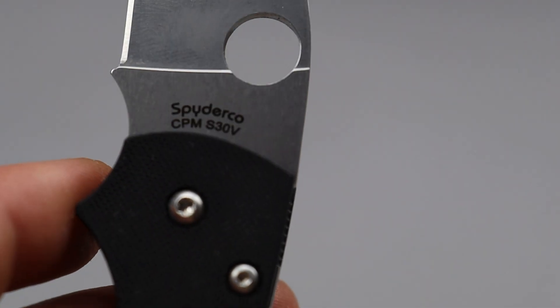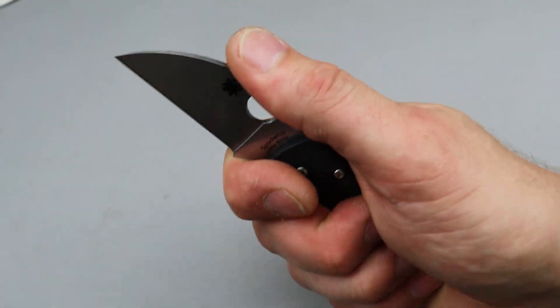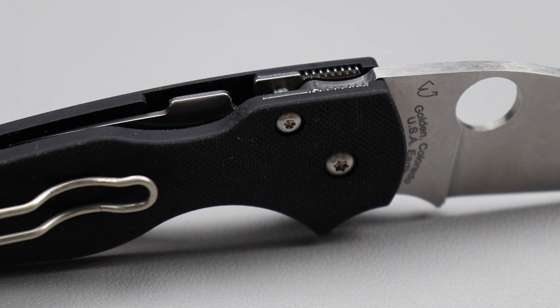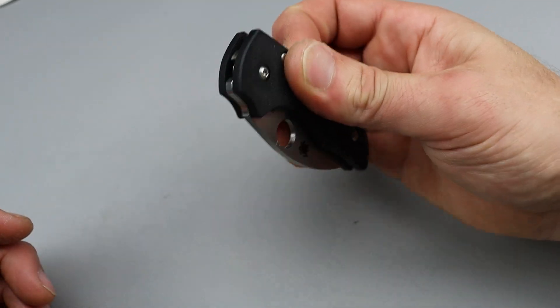The Little Native is in S30V, a little bit bigger, a little bit more hand filling, and is in G10 with a compression lock instead of the back lock. It is riding on washers so very smooth.